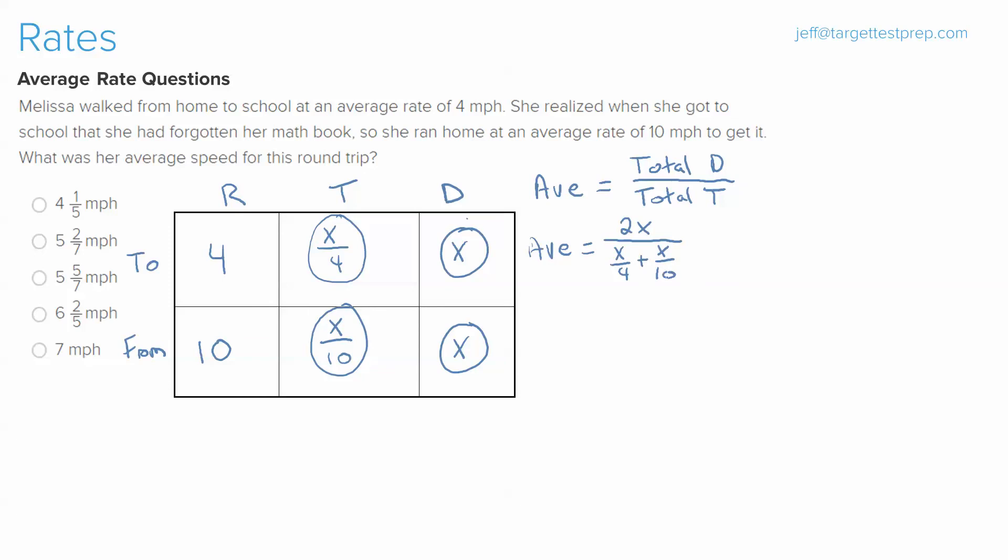Now you'll notice right away that we're going to have to get common denominators for the time. The least common denominator of 4 and 10 is 20, so if we do the shorthand math here, to get that we multiply this by 5 over 5, we multiply x over 10 by 2 over 2, giving us 5x over 20 plus 2x over 20.